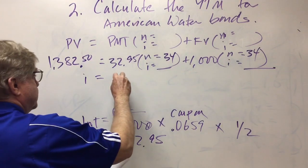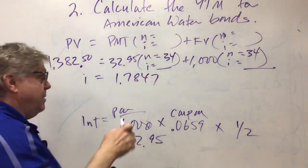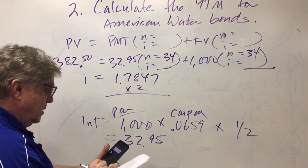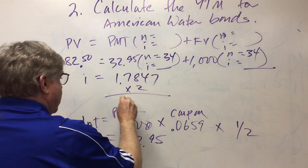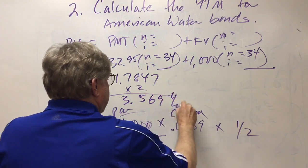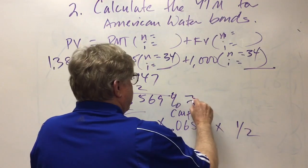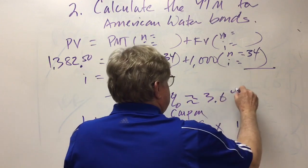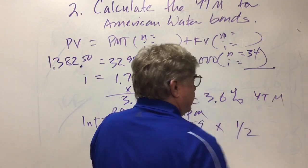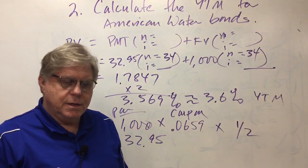We've got the cash flows in there, now 34 is n and now we compute i. The answer is i equals 1.7847 percent. That's a semi-annual percent, so I want to annualize that by multiplying by two. The answer is 3.569 percent. For our purposes, we can round that off to 3.6 percent.